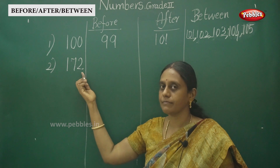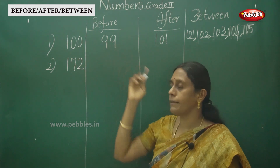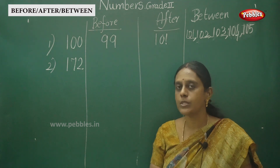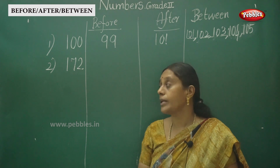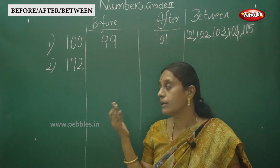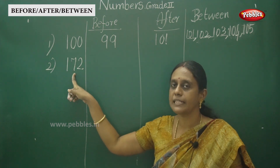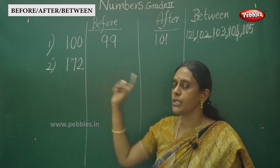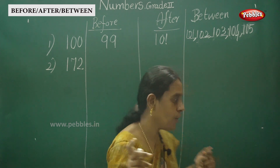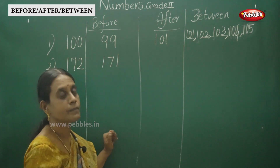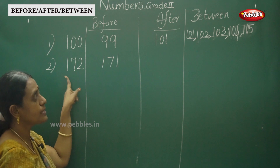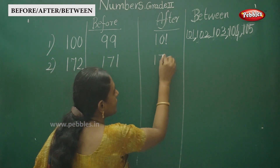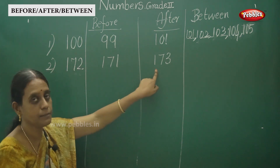This is the two-digit number 72. Counting: 70, 71, 72, 71 — so before 172 is 171. Next, the after number: for 172, the two-digit part is 72, and the next number is 73, so after 172 is 173.